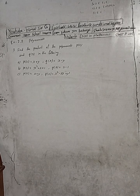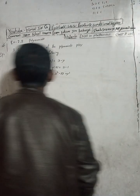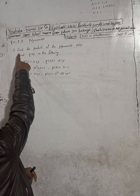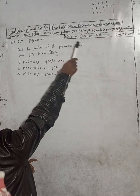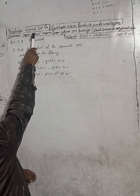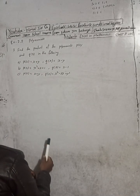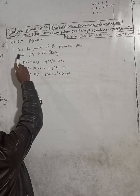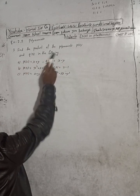Hi class 9 and 10 students, welcome back to Bimal Sarj YouTube channel. This is question number 3, exercise 2.2, polynomials. The question here is number three: find the product of the polynomials P(x) and Q(x) in the following.